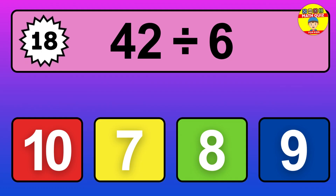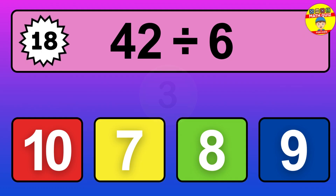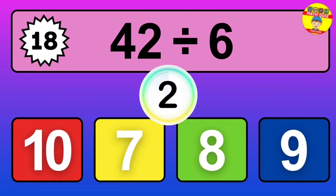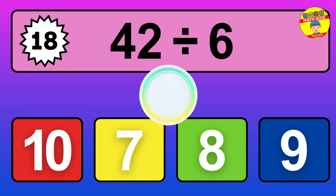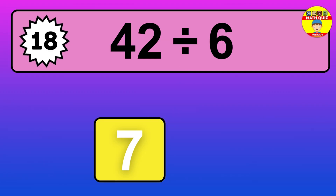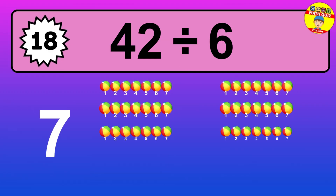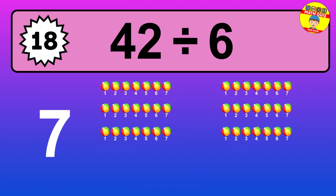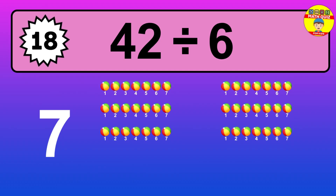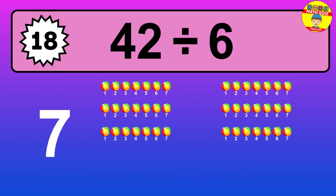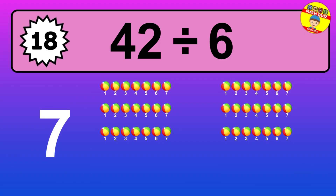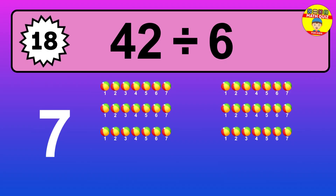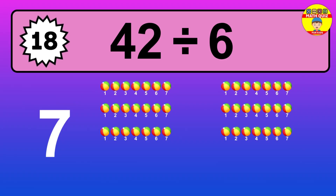42 divided by 6 — it's time to think. Let's go to the solution. Divide the number 42 by 6. Each group contains 6 units, so dividing 42 by 6 results in 7 equal groups. Thus, the result is 42 divided by 6 equals 7.